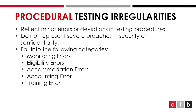Procedural testing irregularities reflect minor areas or deviations in testing procedures. They do not represent severe breaches in security or confidentiality, and they fall into the following categories: monitoring, eligibility, accommodation, accounting, or training errors.